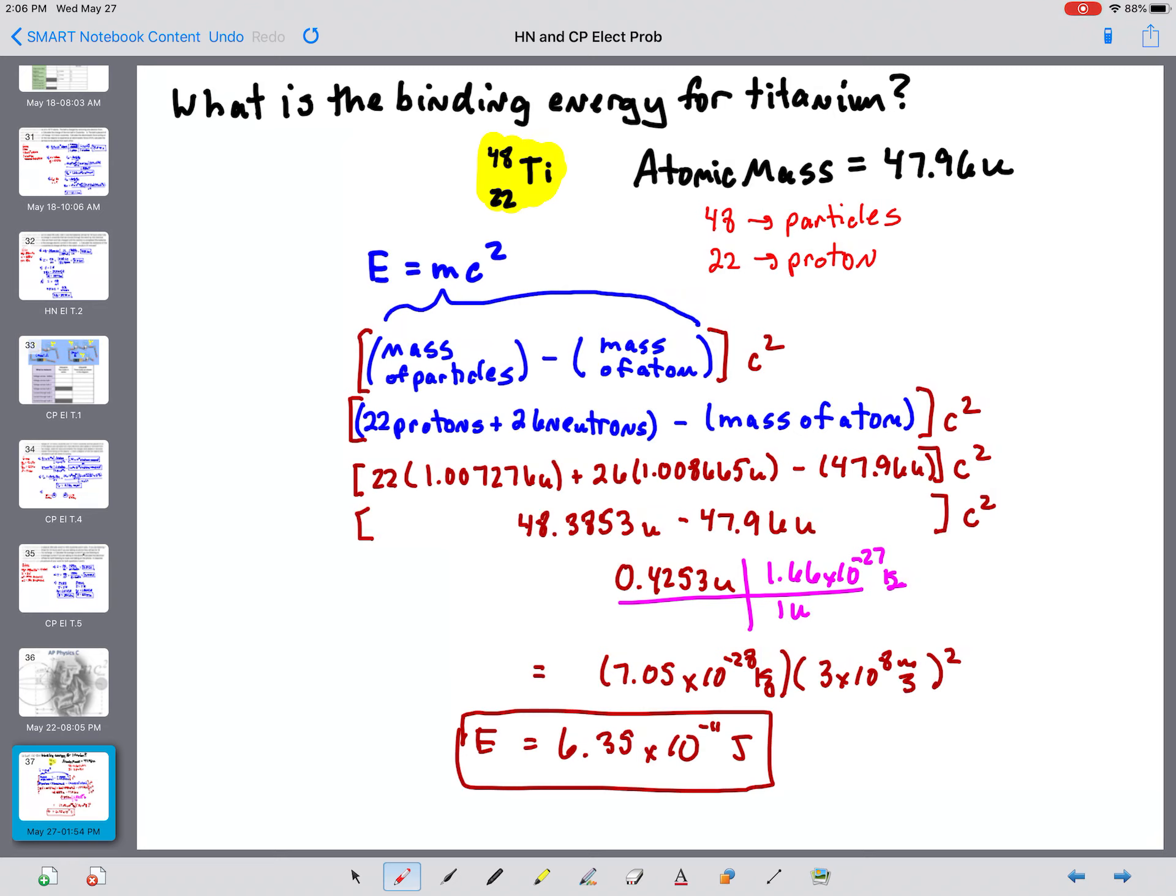So then you're going to need the number of neutrons. So to calculate the number of neutrons, you're just going to take 48 minus 22, and that gives you 26 neutrons.